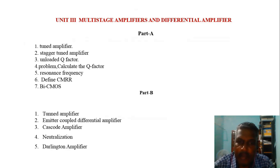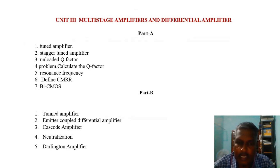In Unit 3, the transistor symbol and the arrow mark are important for identification. Diode anode and cathode symbols should also be known. The emitter-coupled differential amplifier is a key topic — you analyze two-transistor equivalent circuits. This is a relatively easy topic, but derivation is required. The cascode amplifier is mostly about equations and the circuit diagram — that is more than enough, though the equations are quite different.